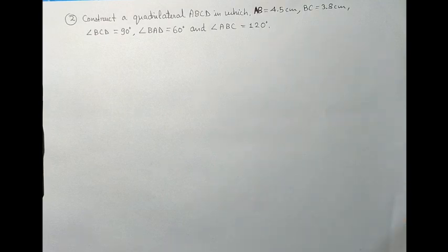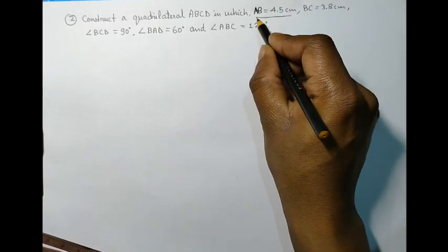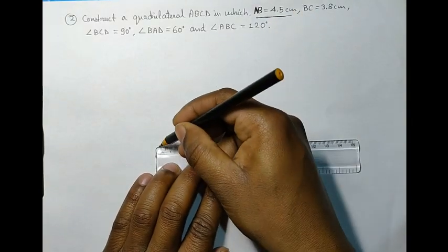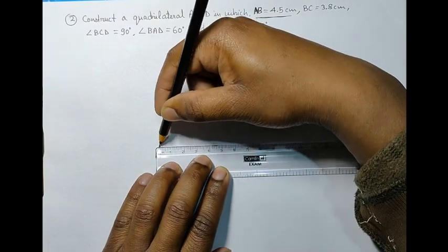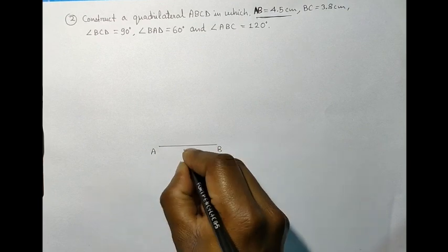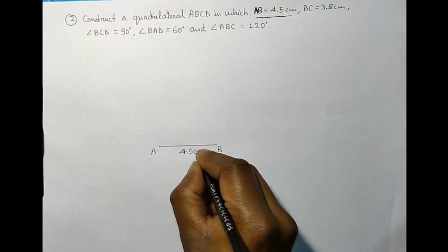It means, we have two sides and three angles given. Let's take the first measurement, that is, AB is equal to 4.5 cm, and draw it using the ruler and pencil. Let's mark the endpoints, AB and the measurement, 4.5 cm.